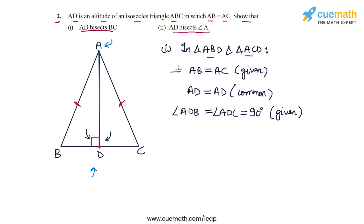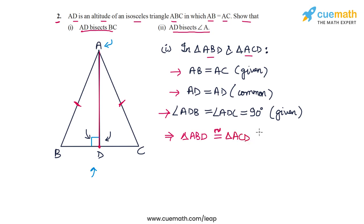So we have two right-angled triangles ABD and ACD in which the hypotenuses are equal, one side pair is equal, and the right angles are equal. We can claim that the two triangles are congruent: triangle ABD is congruent to triangle ACD using the RHS congruence criterion — we have a right angle, a hypotenuse, and a side pair equal.